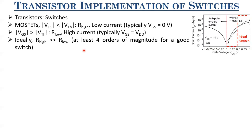Let us discuss tunnel FETs briefly. This curve represents the characteristics of MOSFETs, tunnel FETs, and an ideal switch. For a MOSFET, when VGS approaches zero the current reduces and remains low. For a tunnel FET, at zero volts it shows minimum current, and the current increases more sharply than a MOSFET. However, even for negative voltages, current flows in a tunnel FET — making the voltage more negative also causes current to flow.